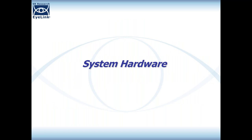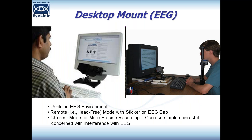In terms of system hardware, for synchronization with EEG devices, people typically use the desktop mount of the iLink 1000 or 1000 Plus. Some EEG researchers use the system in chin rest or head stabilized mode, and some use it in the head free remote mode. If you use the head free remote mode, you need to place a target sticker on the head, which in EEG is not an issue — you can just place the sticker directly on the EEG cap.